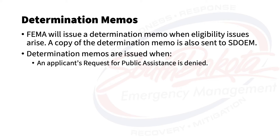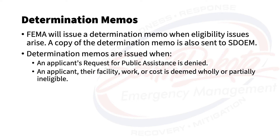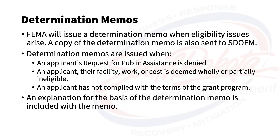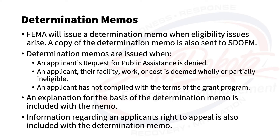Determination memos are issued when an applicant's request for public assistance is denied, their facility, work, or cost is deemed wholly or partially ineligible, or an applicant does not comply with the terms of the grant program. Failure to respond to requests for information can be considered noncompliance. An explanation for the basis of the Determination Memo is included with the memo, as well as information regarding an applicant's right to appeal FEMA's decisions.